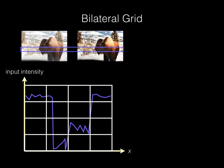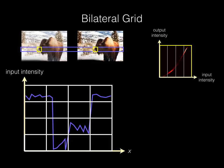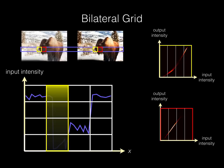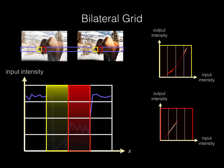In this visualization, the input scanline corresponds to this wiggly blue line. Notice how it only occupies a sparse subset of the grid cells. The curve for the yellow patch corresponds to this column, and the curve for the red patch corresponds to this column. As you slide along the x-axis, you want the curves to change smoothly with respect to x.